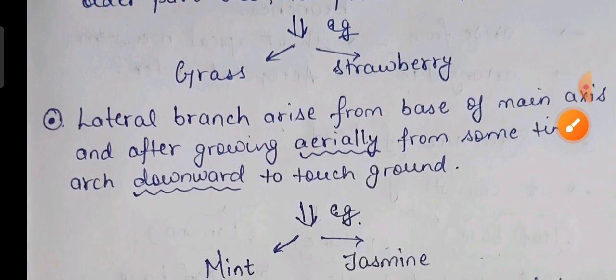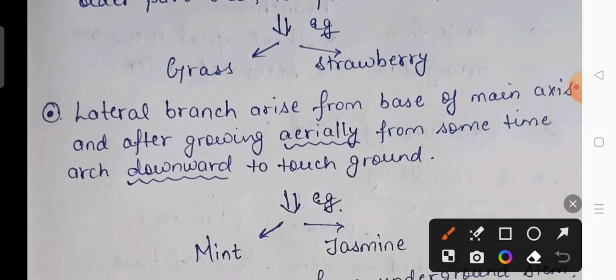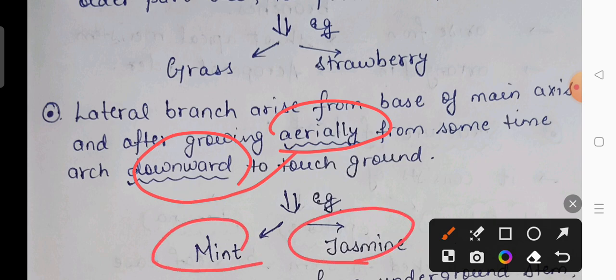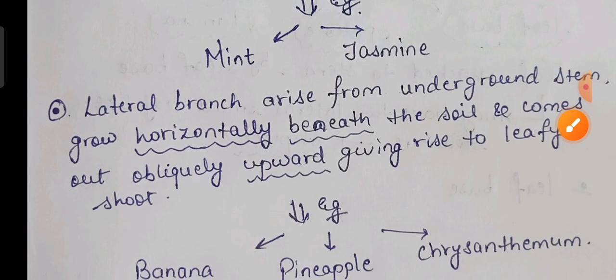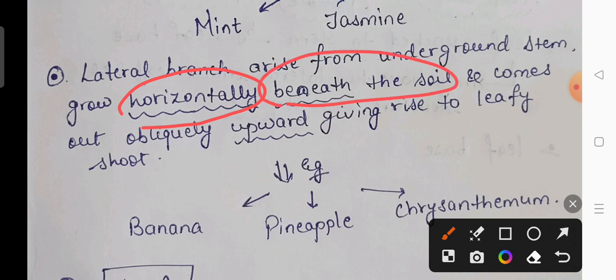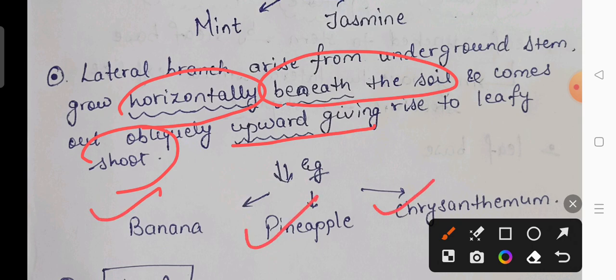Lateral branches also arise from the stem, growing aerially and then touching the ground — these stem modifications are seen in mint and jasmine. Underground lateral branches of some plants grow horizontally below the soil, then move upward to form leafy shoots. This is seen in banana, pineapple, and chrysanthemum.